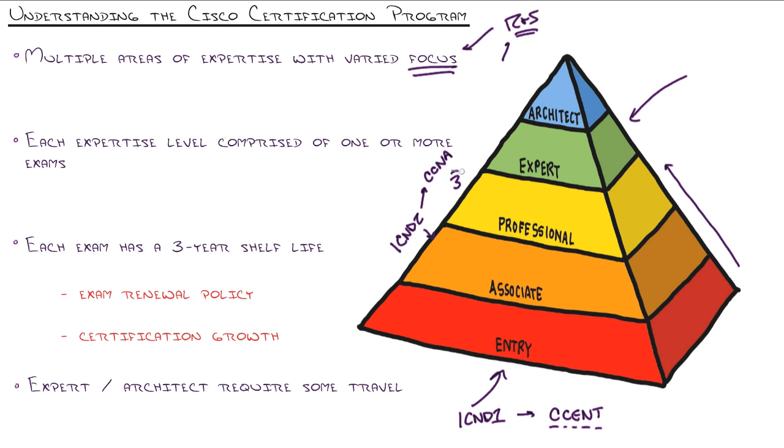You've achieved the associate level certification. Now pass three more exams - one or more exams for each one of these levels. That would be Route, Switch, and T-shoot. And you've achieved the Cisco Certified Network Professional certification. Each one of these putting you into a new class of network engineer, opening new doors of employment, new opportunities of tasks you can perform, concepts you understand, superpowers that you have.